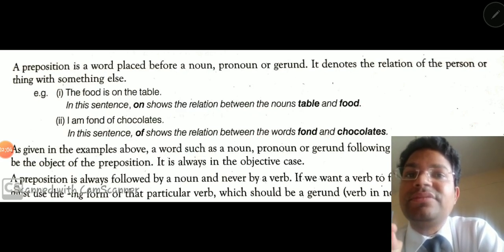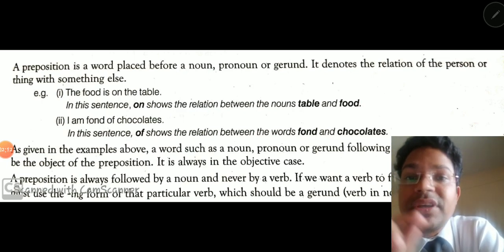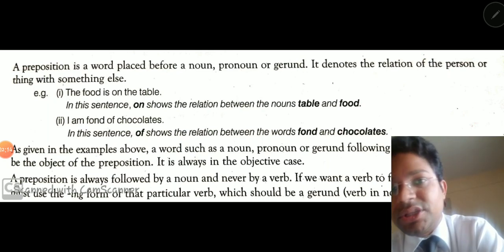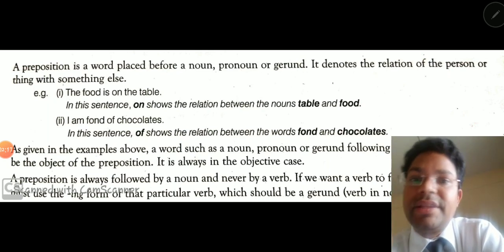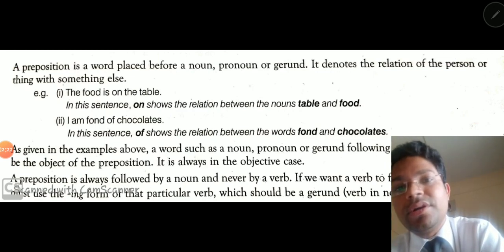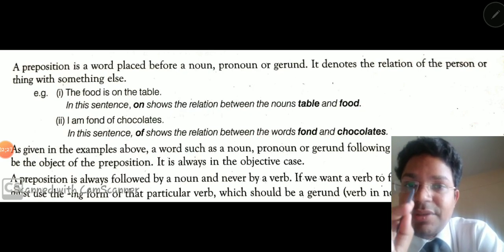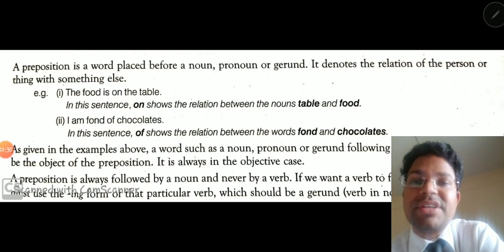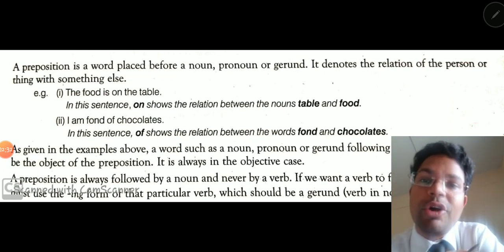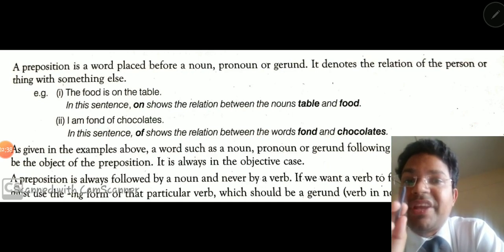It denotes the relation of the person or the thing with something else. The work of preposition is to show the relation between the first noun — that is our subject — and the second noun — that is our object. So it is used in between the subject and the object, and the prepositional word itself shows what the relation is between them. That is why I will make a video on the position of preposition.